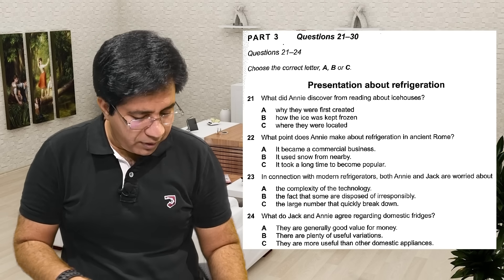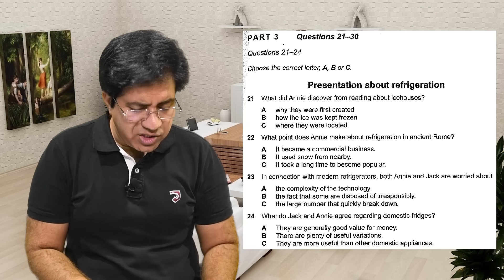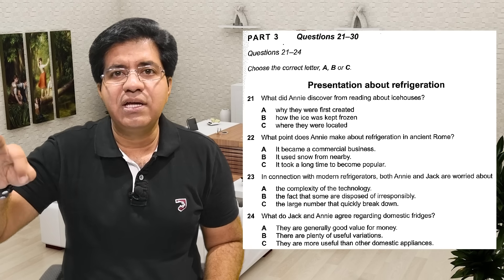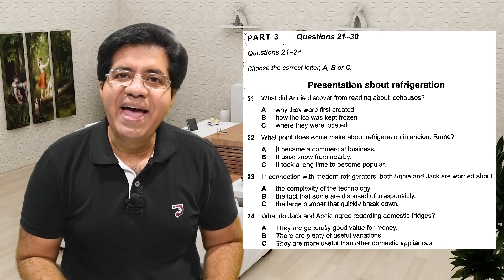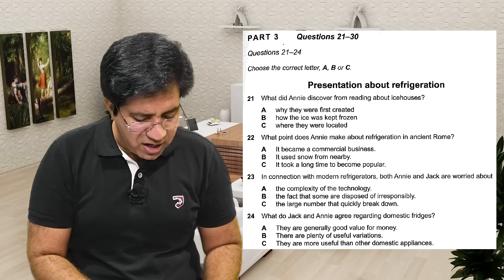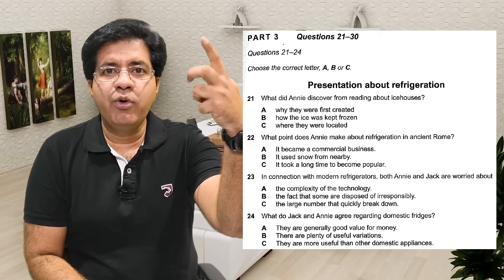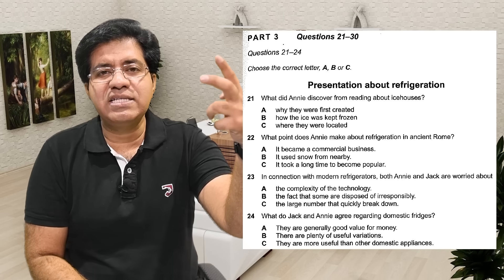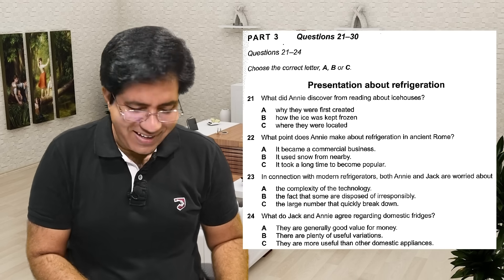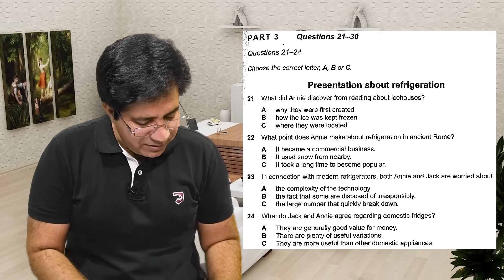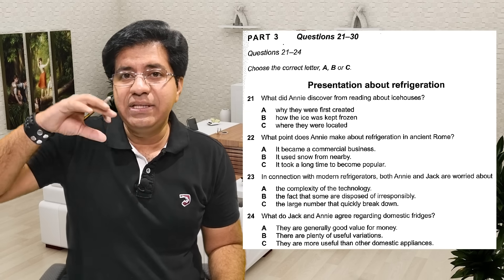Question 24: 'What do Jack and Annie agree regarding domestic fridges?' When they say 'agree' — Jack will say something, Annie will disagree; Annie will say something, Jack will disagree; then on one point they will agree. So three points are made — two points of disagreement and one of agreement. That agreement is the answer. 'They' in the options refers to domestic fridges.